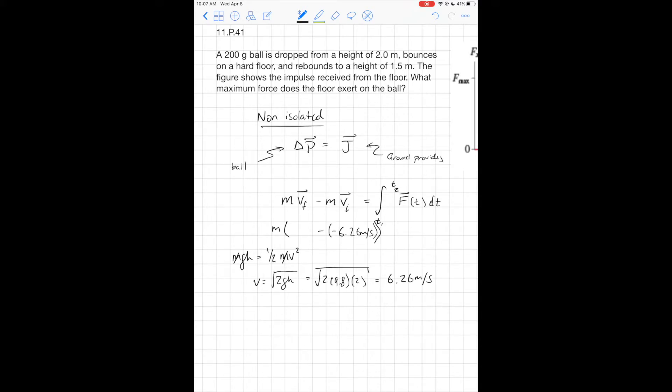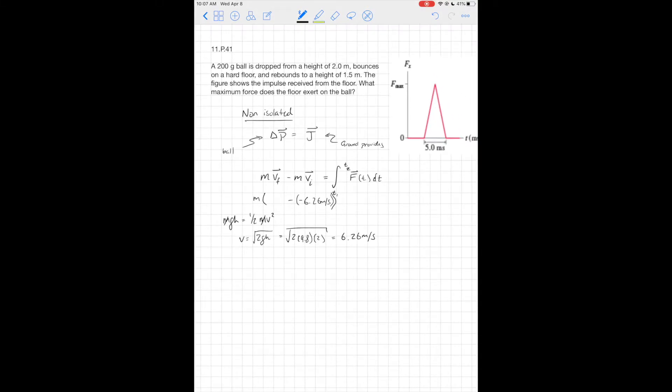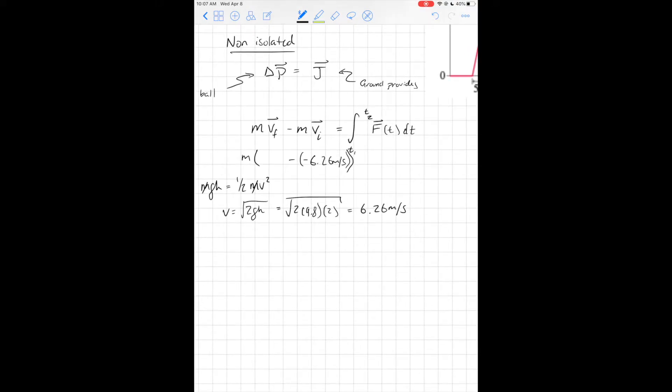It points down, and normally we say that pointing down is negative and pointing up would be positive. So my final velocity after the collision with the ground is going to be positive, it points up. That makes sense if I'm thinking about the force from the ground; it should be positive, and that's what we see in our figure.